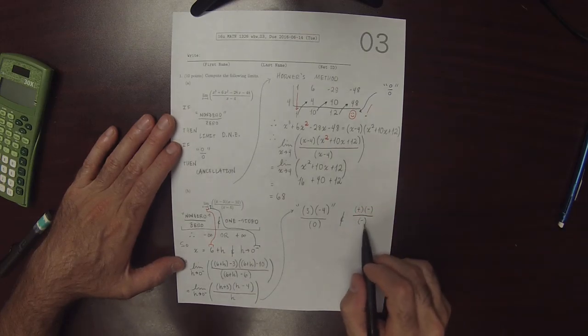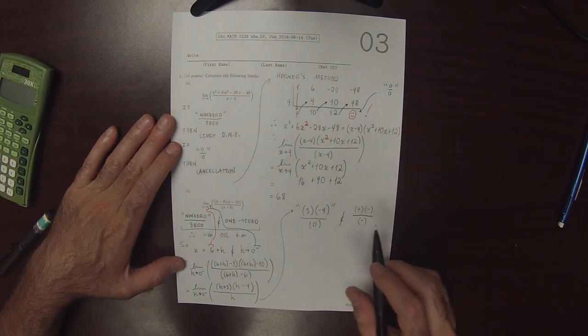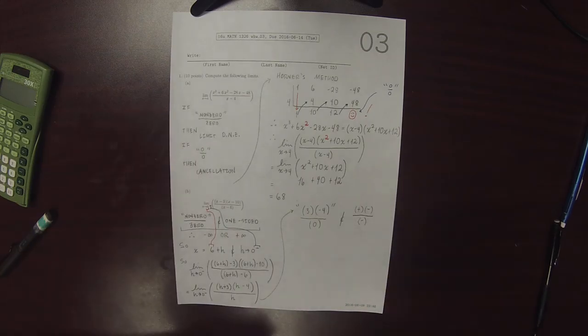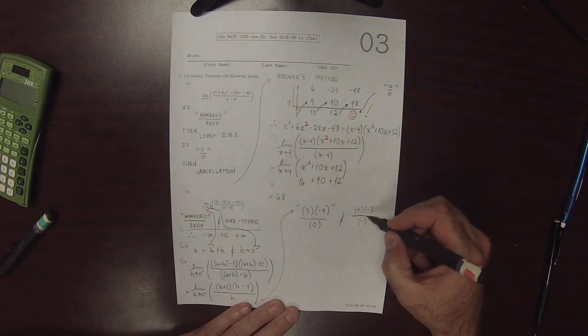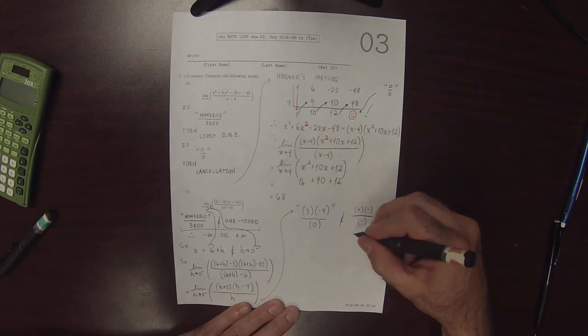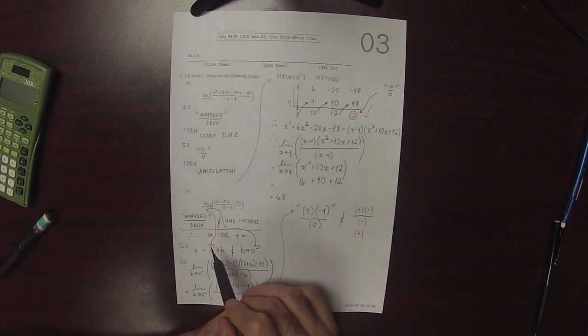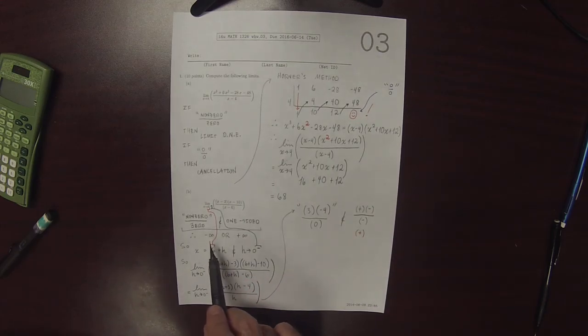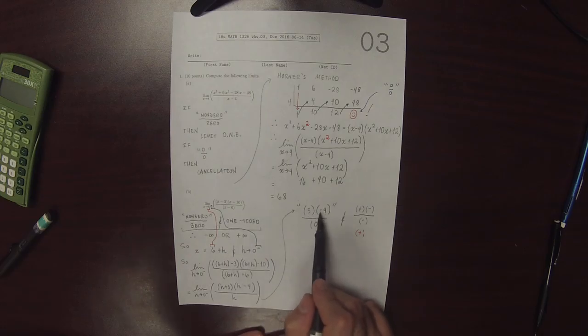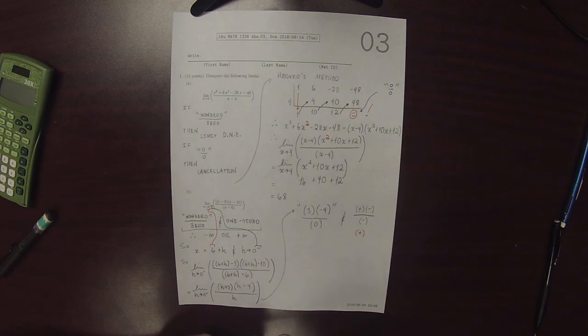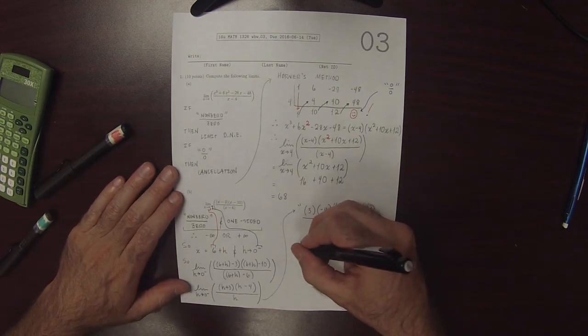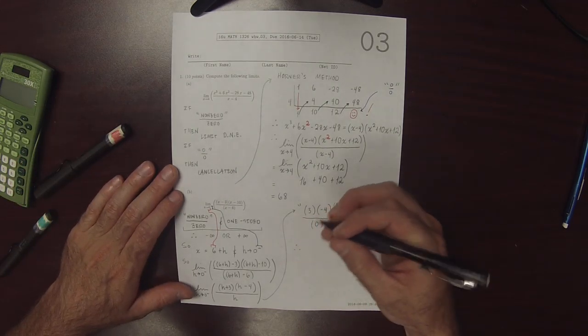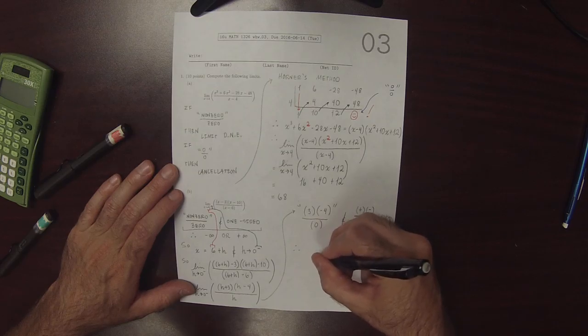And so now the overall sign of this expression is positive because the negatives cancel. So that means that at the beginning of this exercise when we said it needs to be negative infinity or positive infinity because it's non-zero over 0, we've now determined that it must be positive infinity. So therefore the answer is positive infinity.